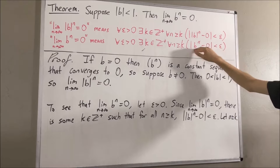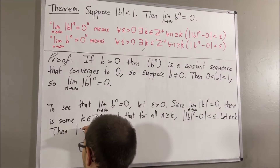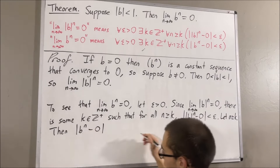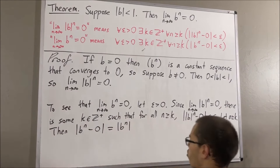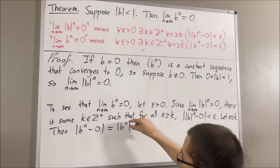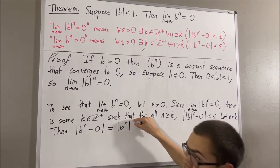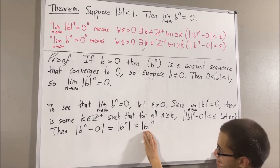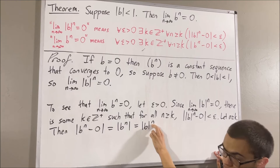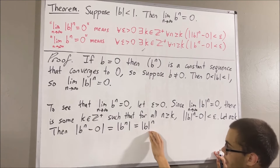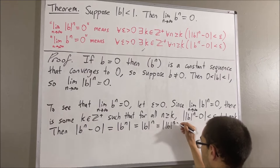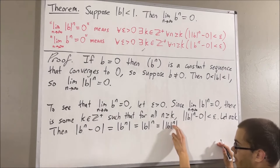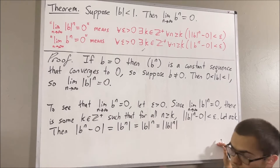Let me start by writing the left-hand side. We know that the absolute value of b to the n minus 0 is equal to the absolute value of b to the n. But one of our properties of absolute value tells us we can pull the exponent n outside the absolute value. Since the absolute value of b is greater than 0, the absolute value of b to the power of n is greater than 0. So this is equal to the absolute value of itself, and of course the inside absolute value of b to the power of n is equal to the absolute value of b to the power of n minus 0.